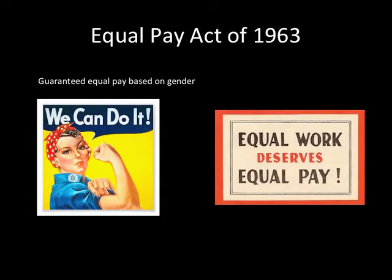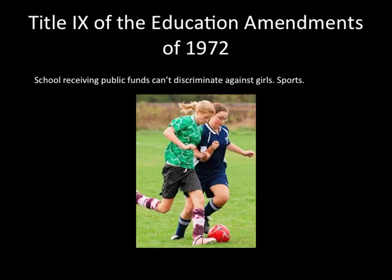The Equal Pay Act was for women — it guaranteed equal pay based on gender, passed by JFK back in 1963. You also have Title IX, which was also for gender rights. It basically said that if a school receives public funds, they can't discriminate against girls. This is used for sports mostly — if there is a boys' football team, then girls have a right to make their football team, basketball team, soccer, or whatever other sport. So if you're a girl playing sports, you have Title IX to thank for that.